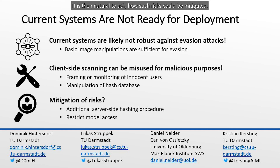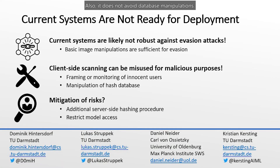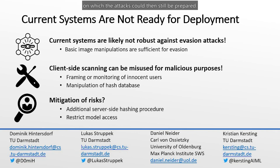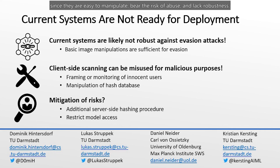It is natural to ask how such risks could be mitigated. One possibility is adding a server-side hashing procedure to double-check flagged images; however, this removes the privacy promised by client-side scanning and does not prevent database manipulation. Restricting model access would make gradient-based attacks unfeasible, but evasion attacks could still be achieved by simple image transformations, and model extraction attacks might still clone the model. Altogether, from a technical and ethical viewpoint, we take the position that NeuralHash and related client-side scanning systems do not provide a safe method for detecting illegal content and therefore should not be deployed on user devices, since they are easy to manipulate, bear the risk of abuse, and lack robustness.